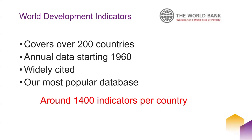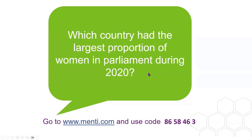The World Development Indicators is one of our most widely used and widely cited data sets. It provides a broad picture of poverty trends, development indicators, use of environmental resources, public sector performance, the labour market, infrastructure, health, education, and gender. We have a question: which country had the largest proportion of women in parliament during 2020? Go to menti.com and use the code 8658463.